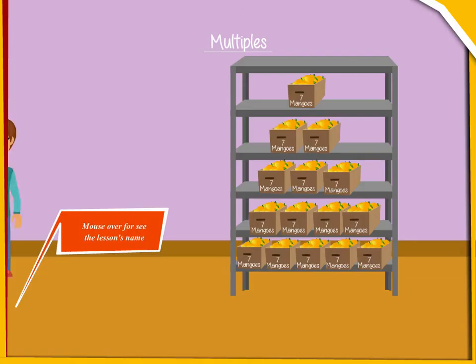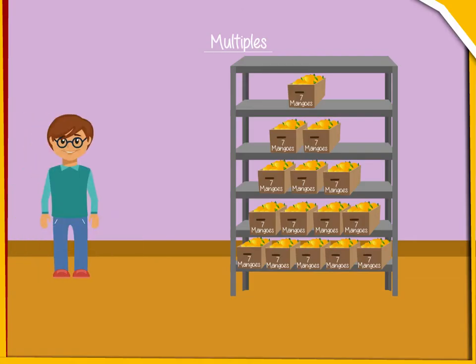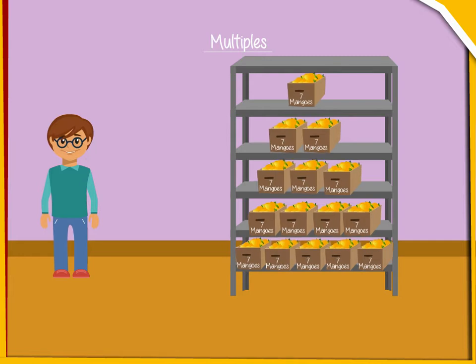Multiples. Jatin is in his backyard where his father has kept some cartons of mangoes. In each carton there are seven mangoes.